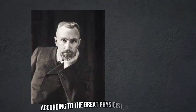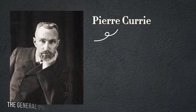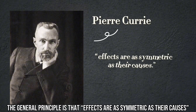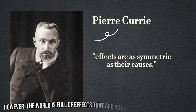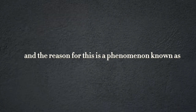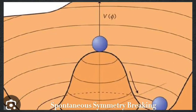According to the great physicist Pierre Curie, the general principle is that effects are as symmetric as their causes. However, the world is full of effects that are not as symmetric as their causes, and the reason for this is a phenomenon known as spontaneous symmetry breaking.